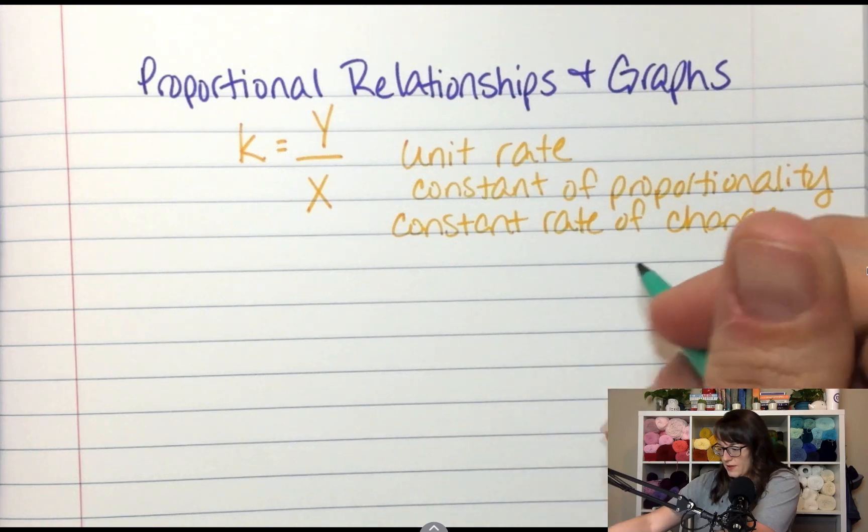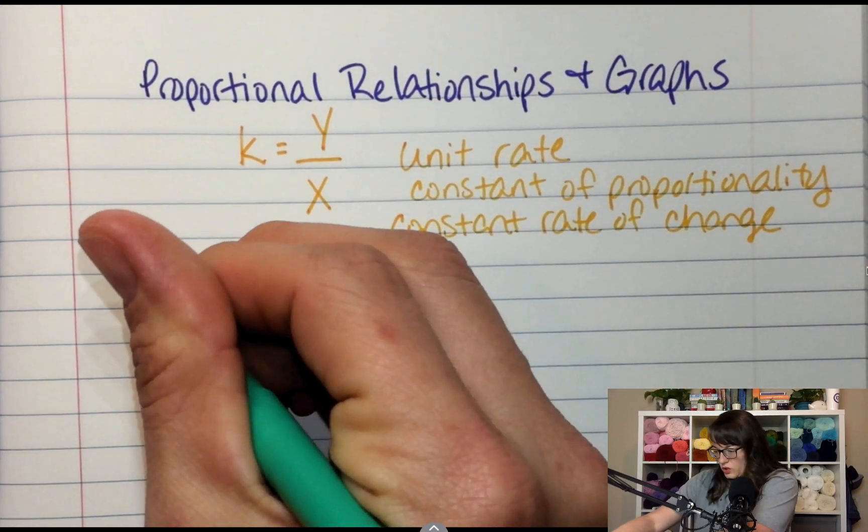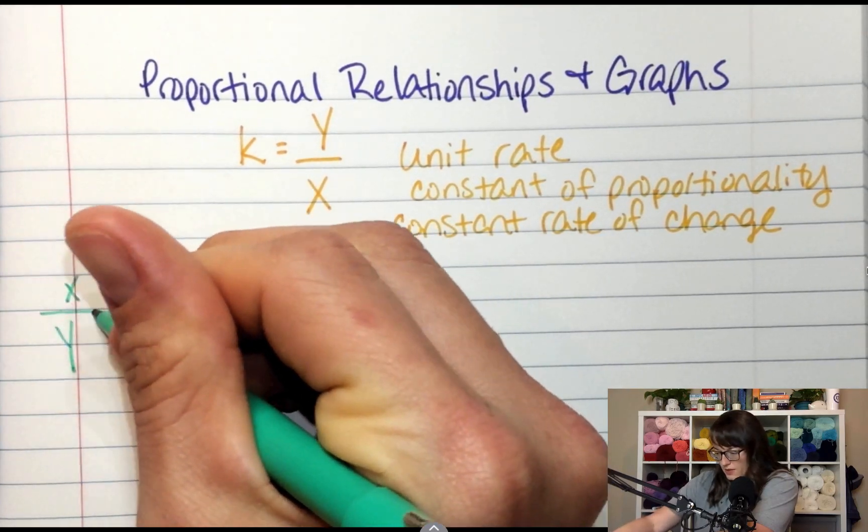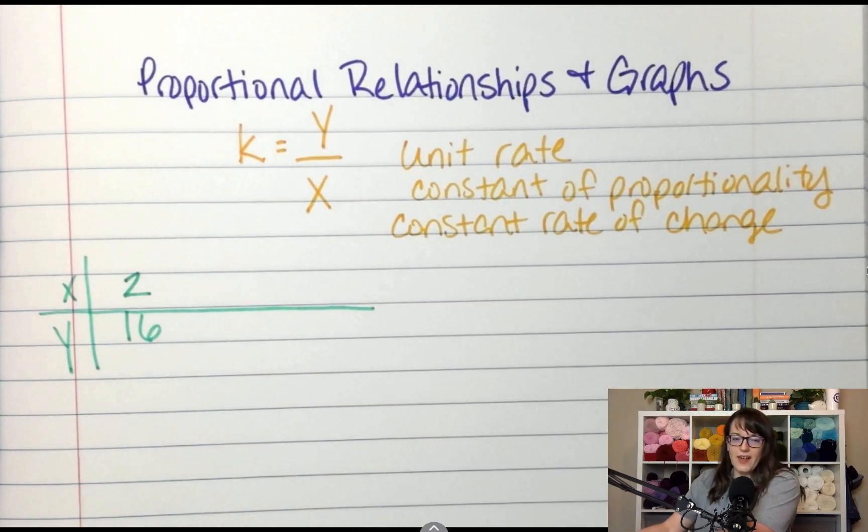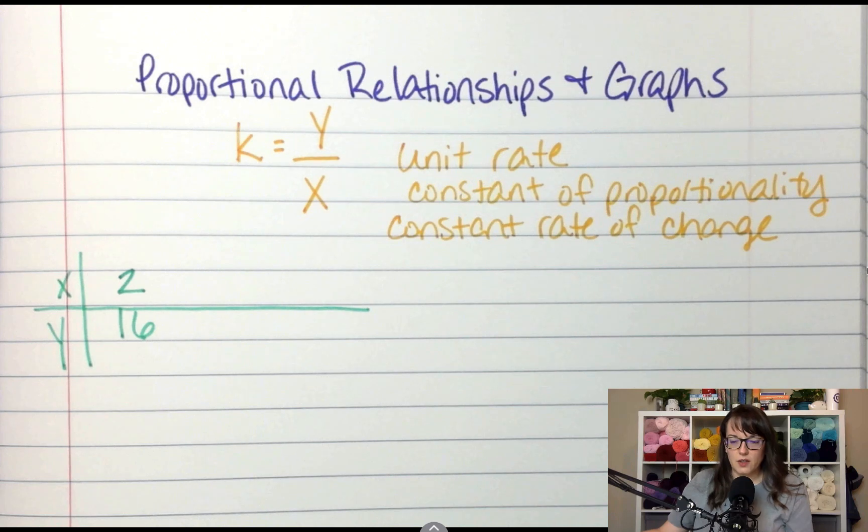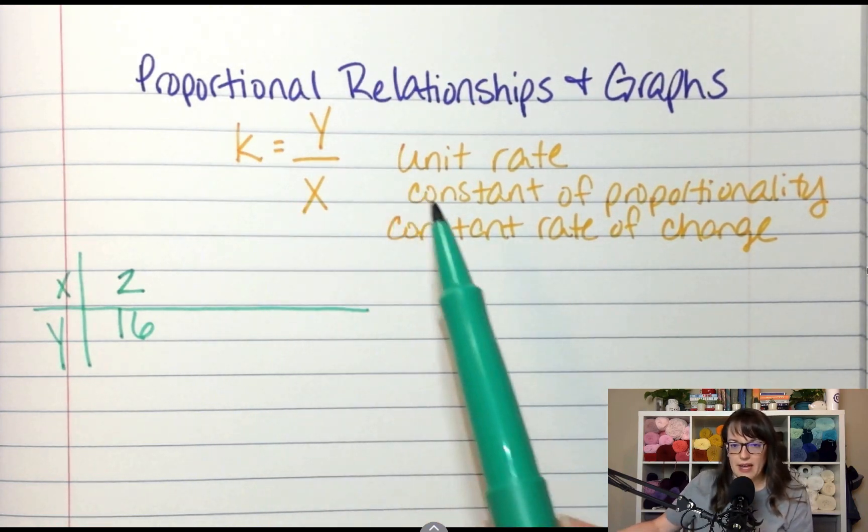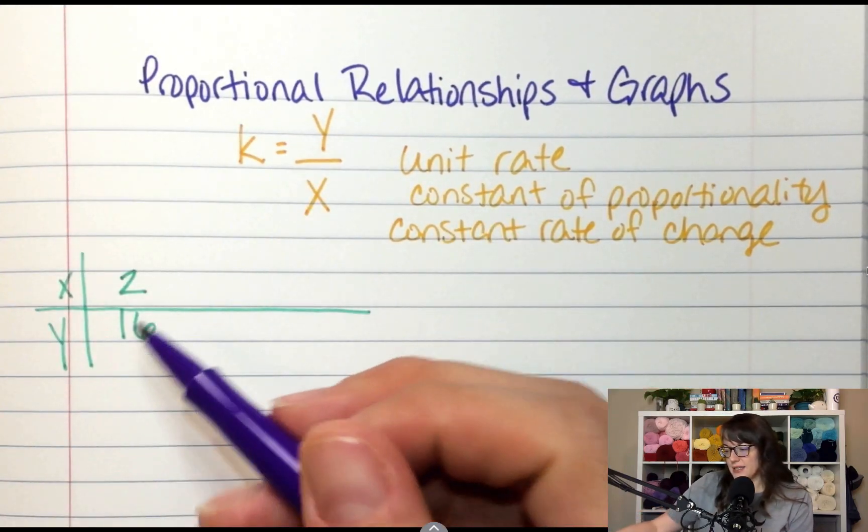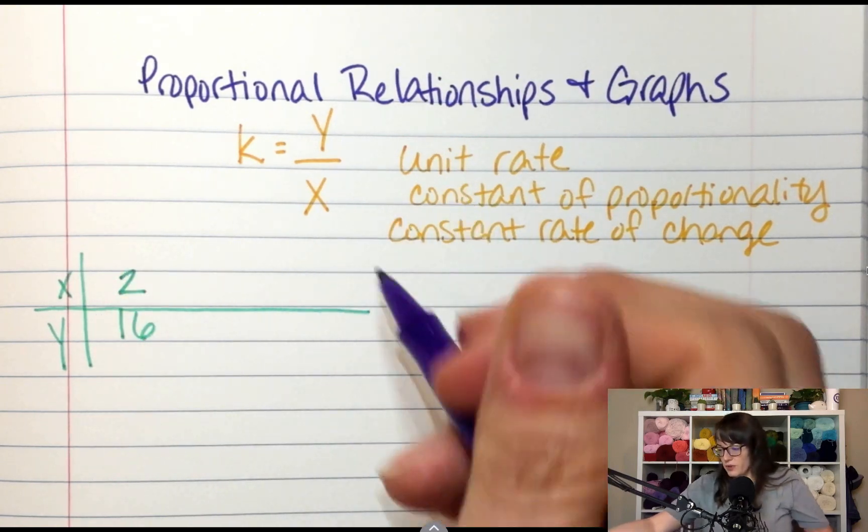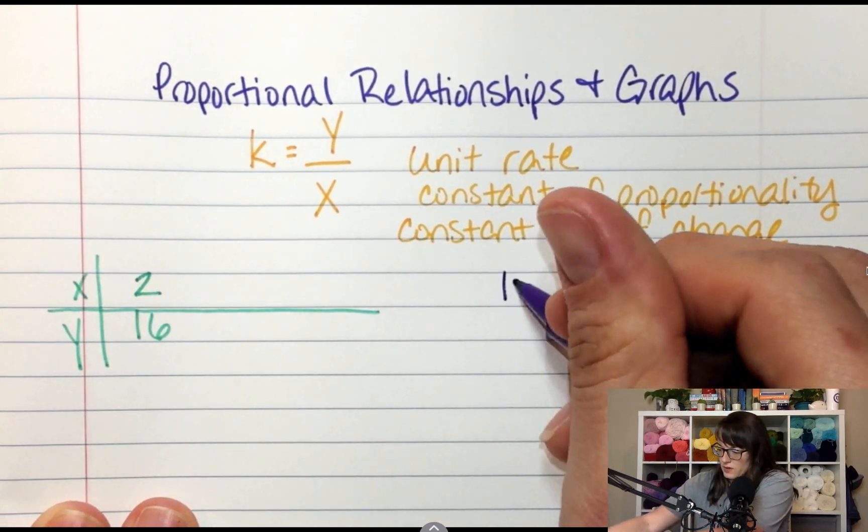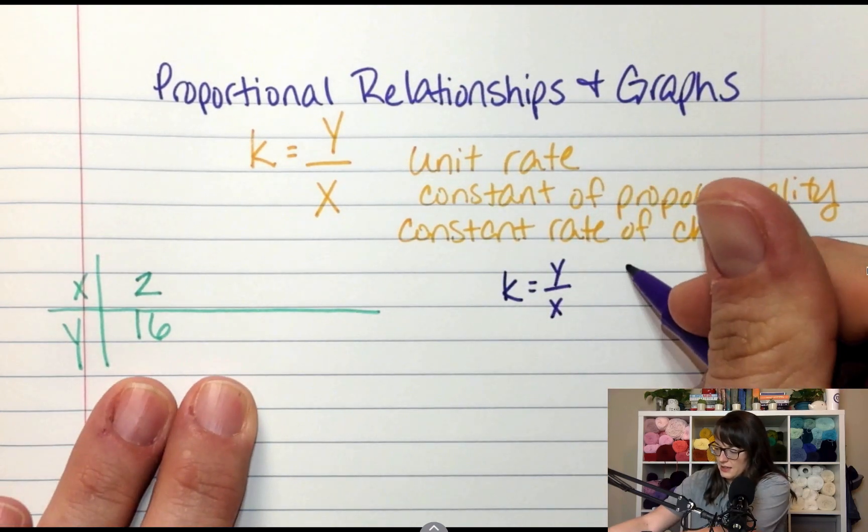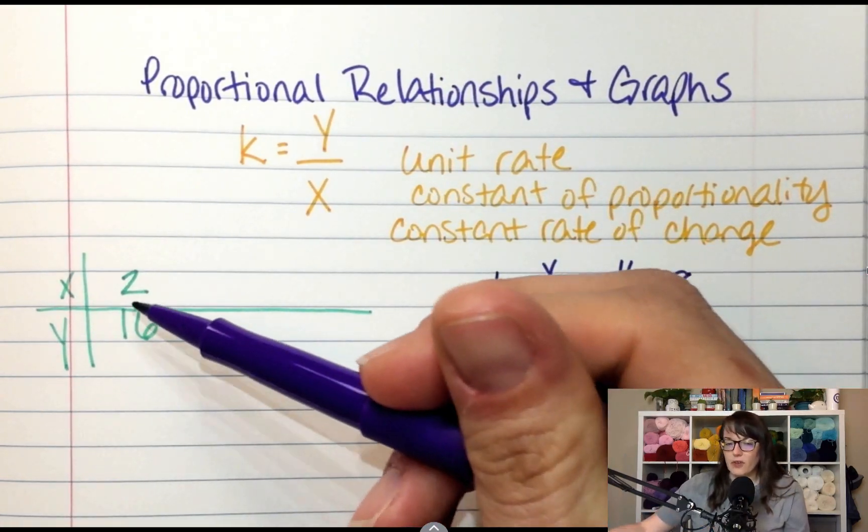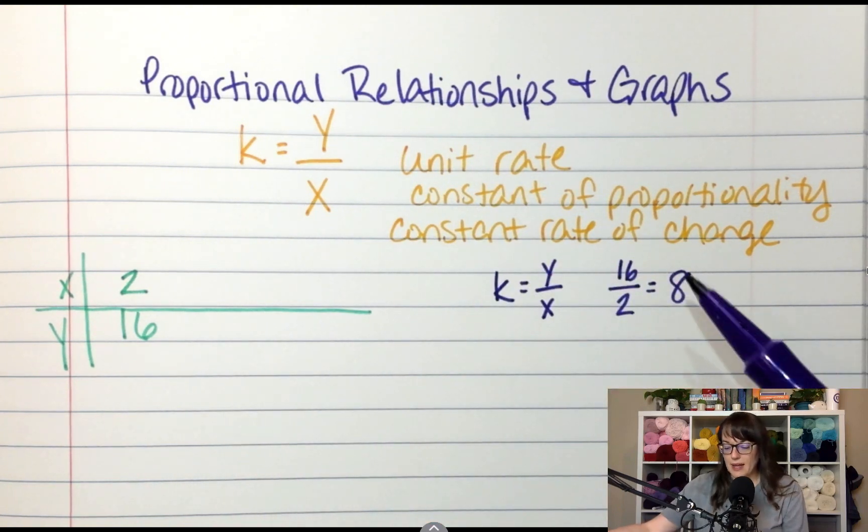So here is an example. If I had 2 and it was 16, and this is x and y, x is always on top, y is always on bottom. So if I had 2 and 16, what is my k? What is my constant rate of change? 8, because 16 divided by 2. So if I did my k equals y divided by x and I did 16 divided by 2 equals 8. So that just means to get from 2 to 16, I multiplied by 8.